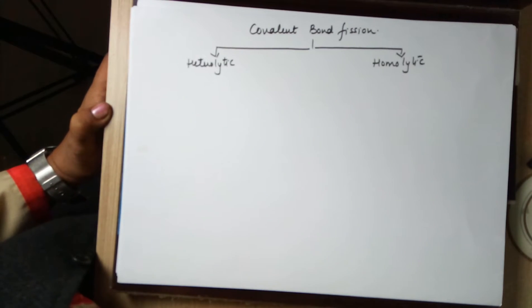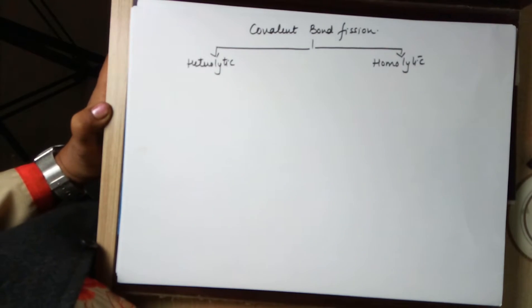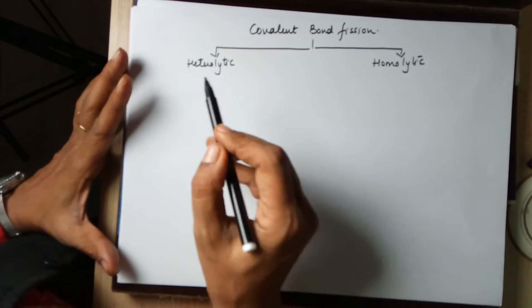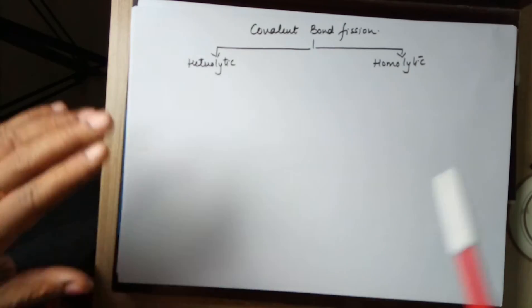Very good evening students. In today's class we will be dealing with covalent bond fission. Under this category you have got two ways of bond fission: heterolytic and homolytic.